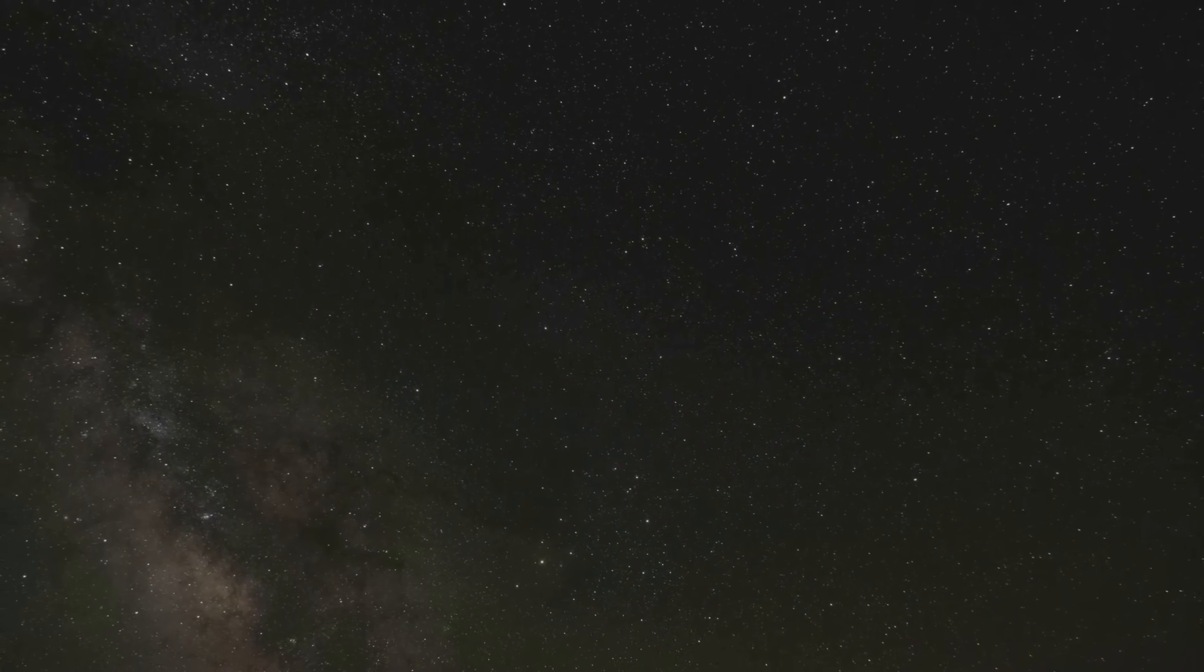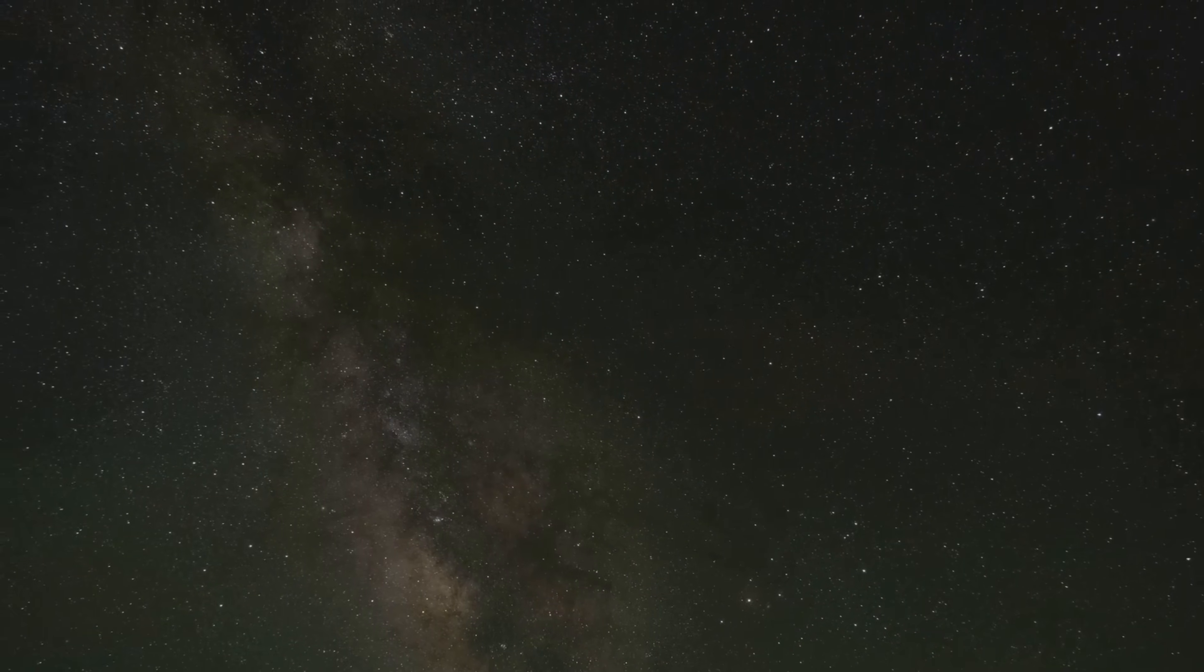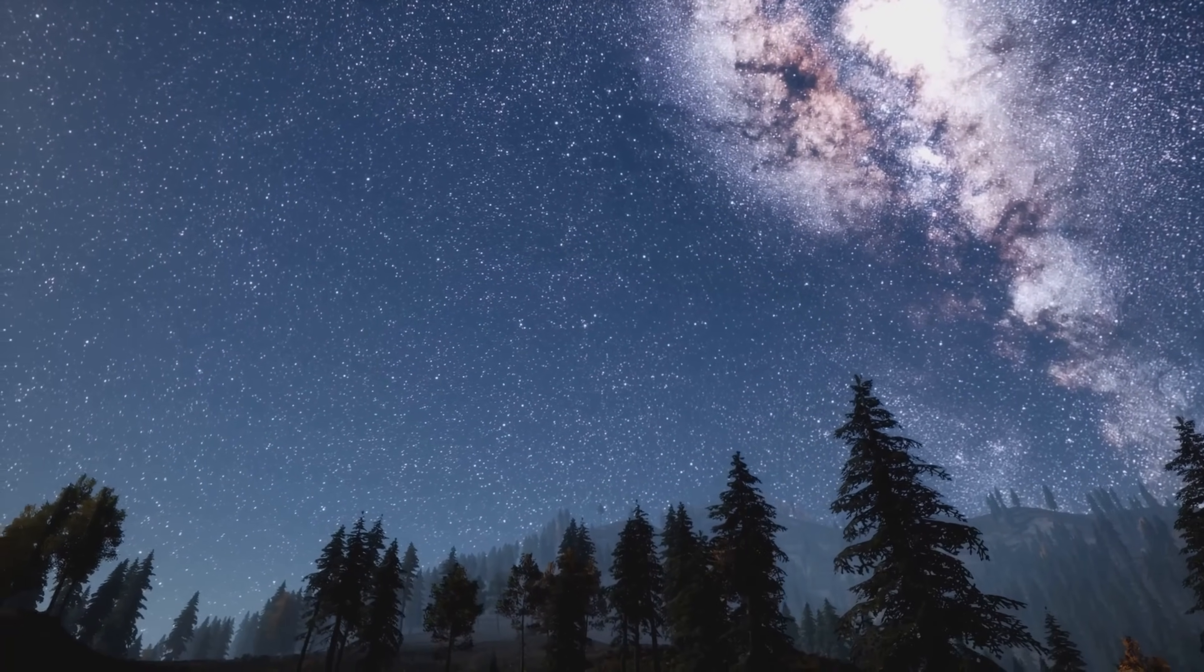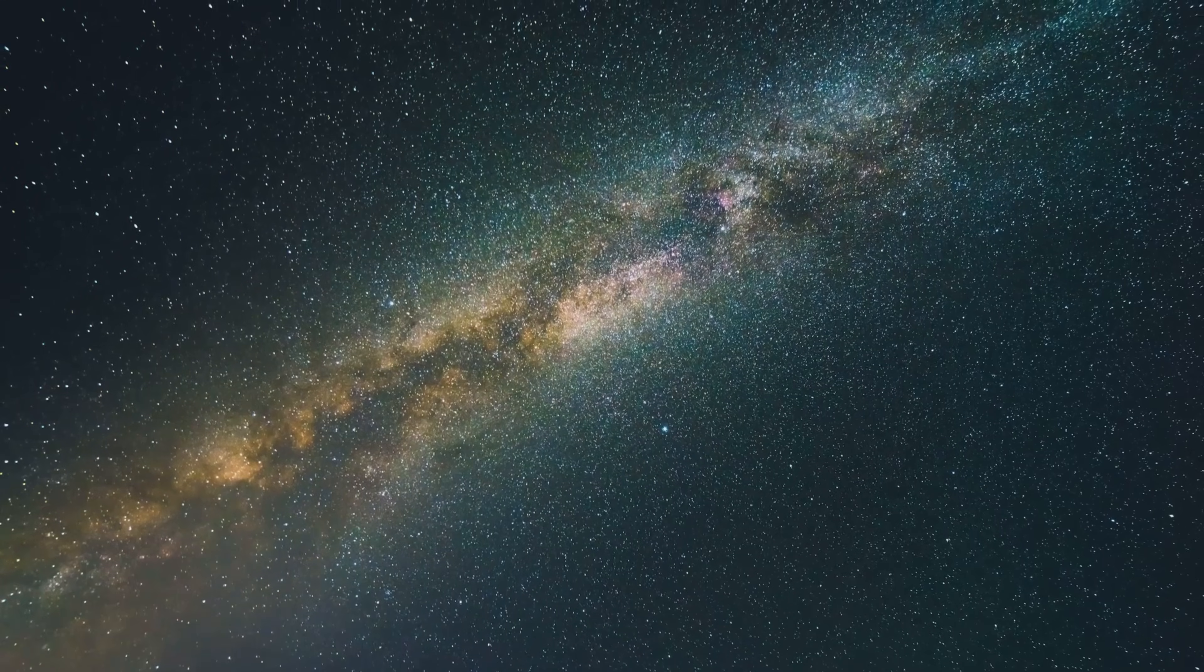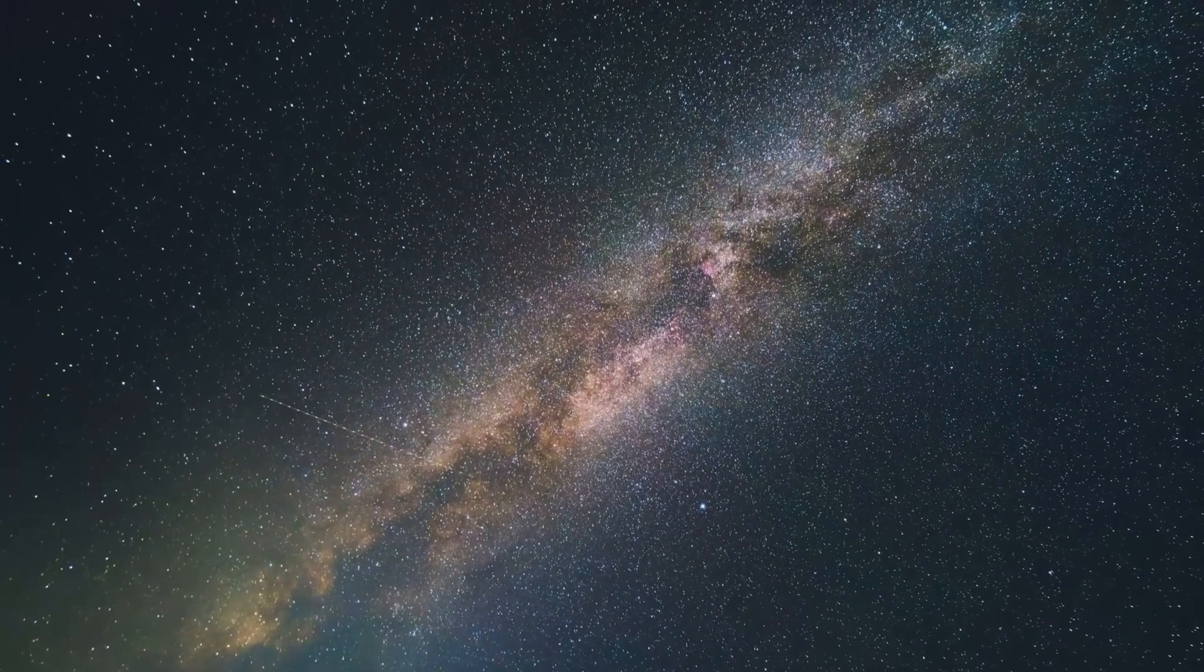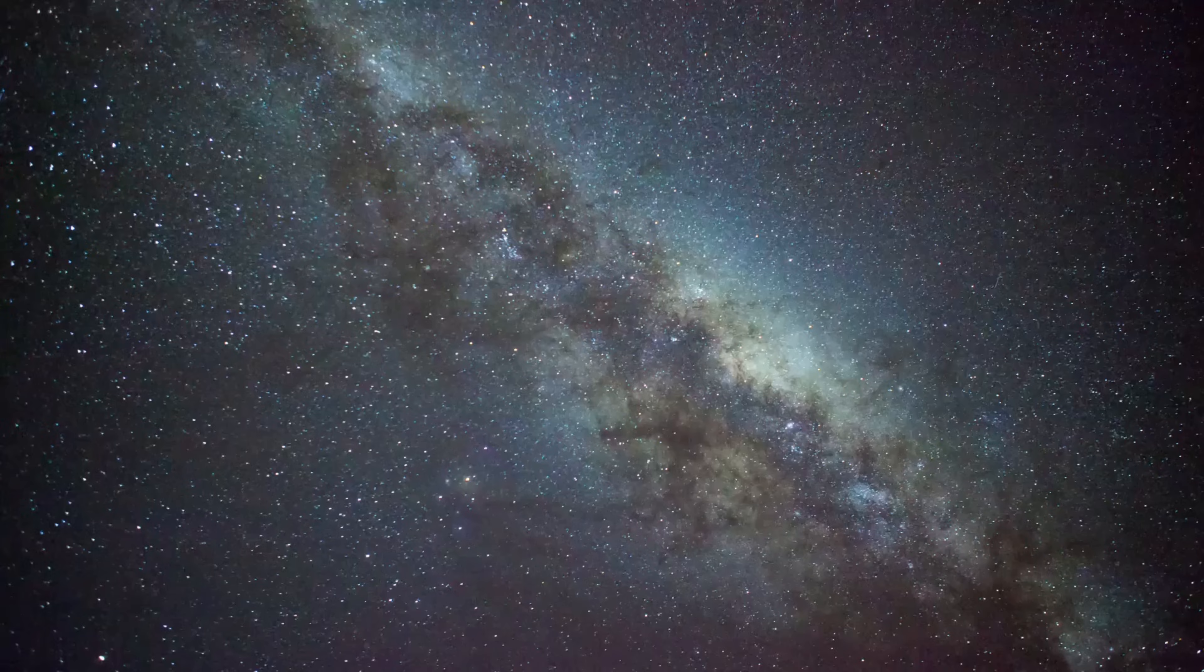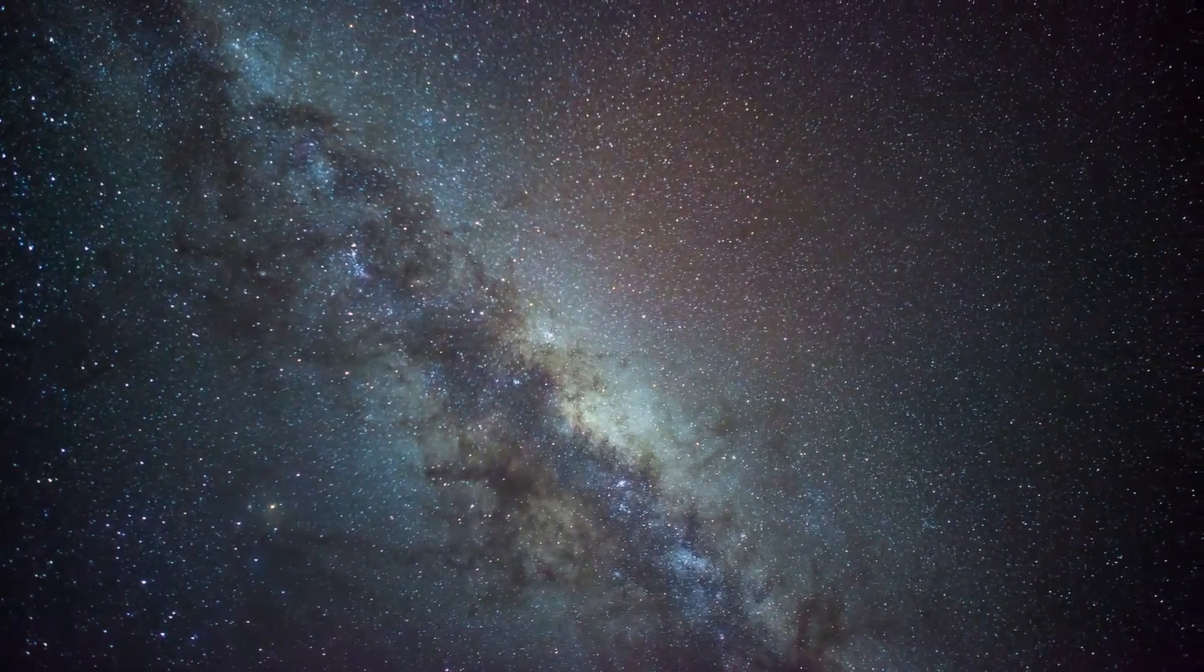From our vantage point on Earth, we see the Milky Way as a band of light stretching across the night sky. This band is most visible in areas with little light pollution, where the combined light of billions of stars creates a stunning luminous ribbon that spans the heavens. This band is made up of the combined light of billions of stars. Each tiny point of light represents a star, many of which are similar to our own sun. The light we see has traveled for thousands of years to reach us, providing a glimpse into the distant past of our galaxy.